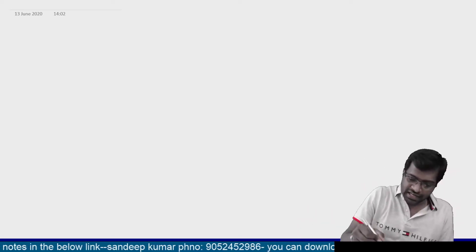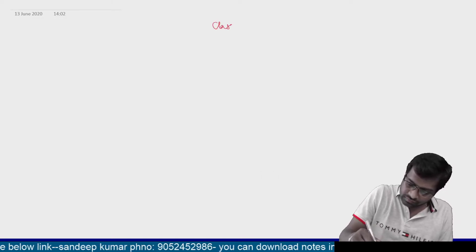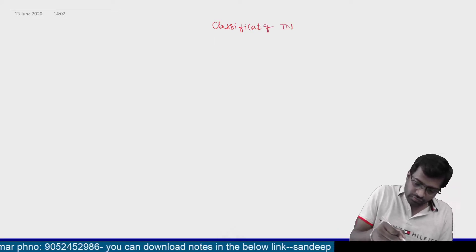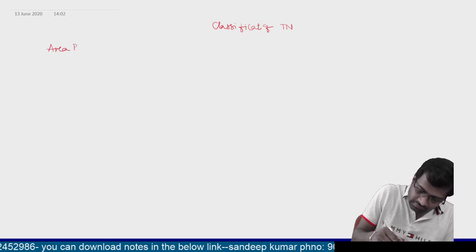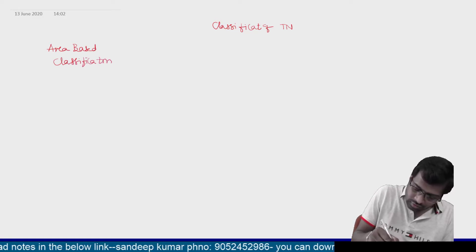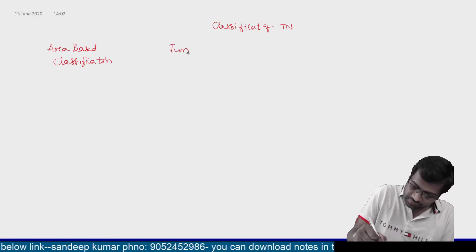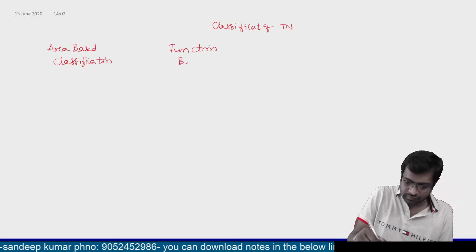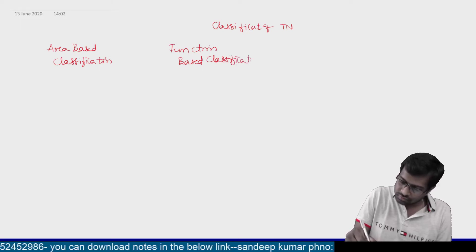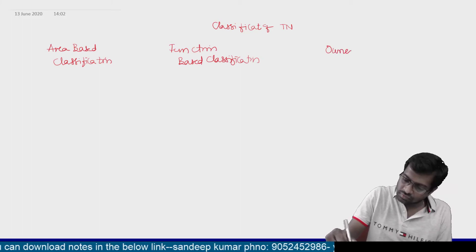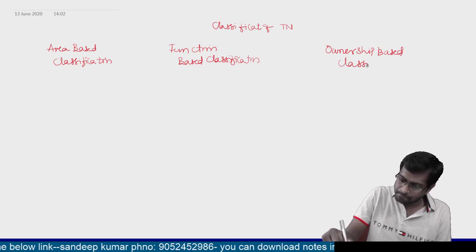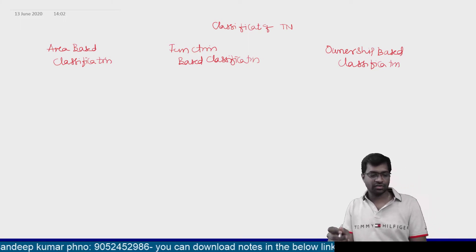We are studying classification of telecommunication networks. We completed the first one — area-based classification — and the second one — function-based classification. Now let us go to the third one: ownership-based classification.